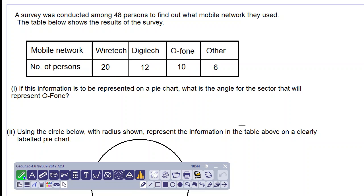Good day everyone, we are working on this pie chart question. We have a survey conducted among 48 persons to find out what mobile network they used. The table below shows the results of the survey. Four mobile networks are here and we have the number of persons for each network.